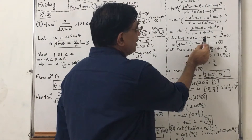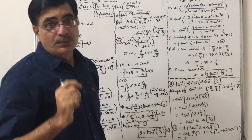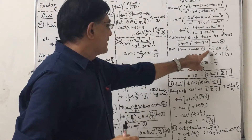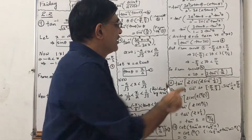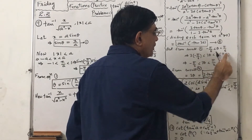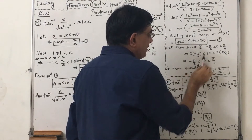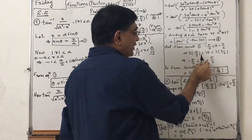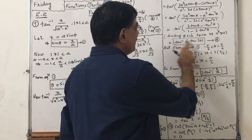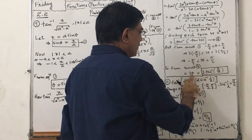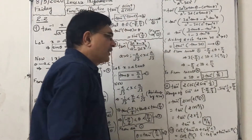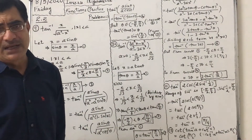Now I have to prove that 3θ is also in the range of tan⁻¹. From the result minus π/6 less than θ less than π/6, multiplying all by 3: minus π/2 less than 3θ less than π/2. So 3θ is also in the range of tan⁻¹. This gives us the identity function, so it equals 3θ. But θ = tan⁻¹(x/a), so the final simplified form is 3·tan⁻¹(x/a).